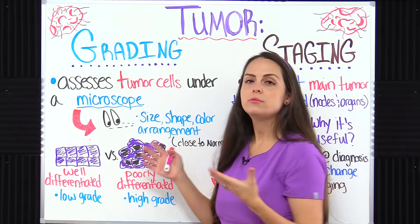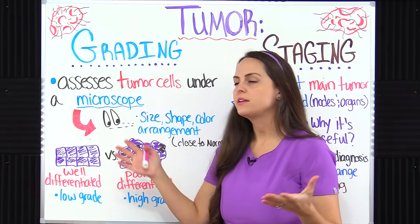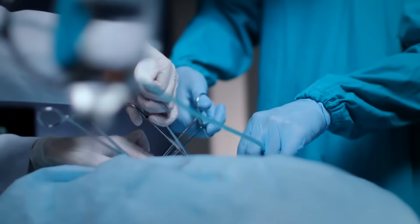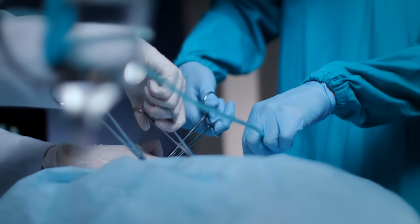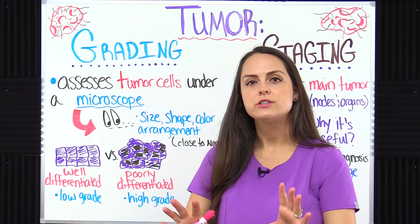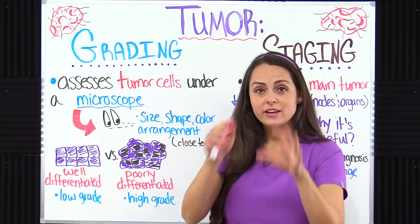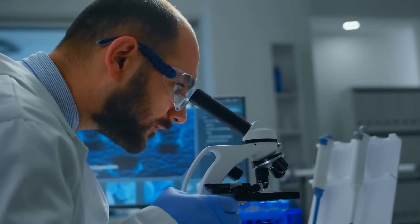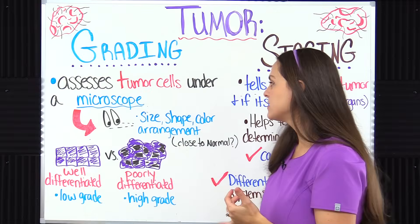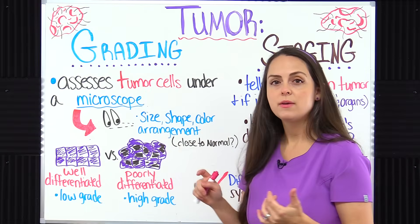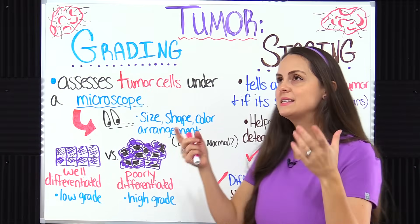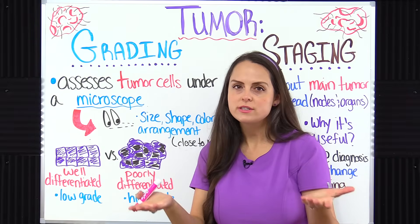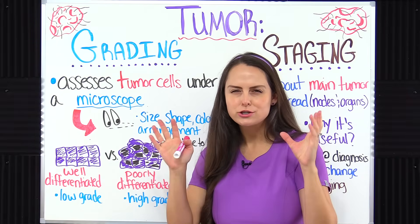Tumor grading assesses tumor cells underneath a microscope. A doctor goes in, removes part or all of the tumor, and sends it to a pathologist who will look at those cells underneath a microscope. The pathologist is looking at the cell's size, shape, color, and arrangement, and seeing how much those cells deviate from how healthy normal cells from that area should look.